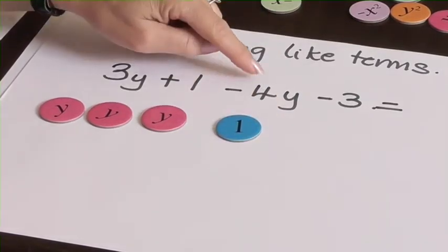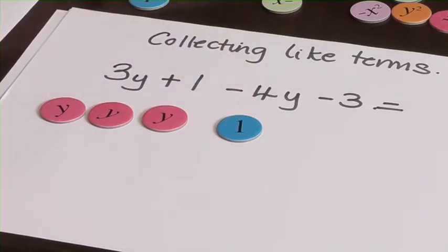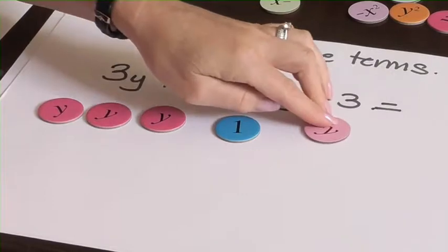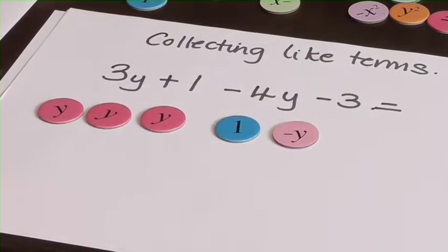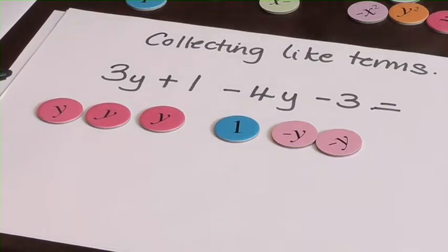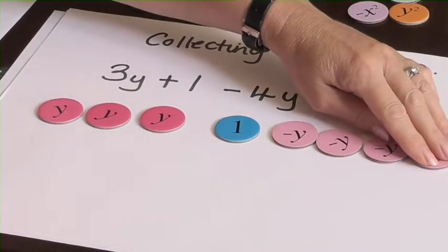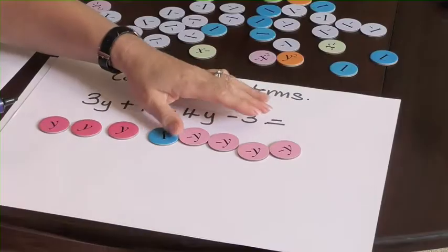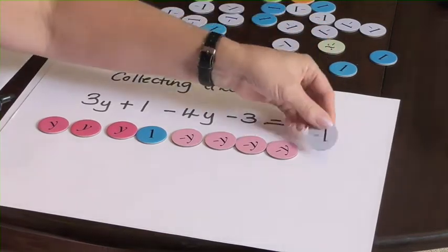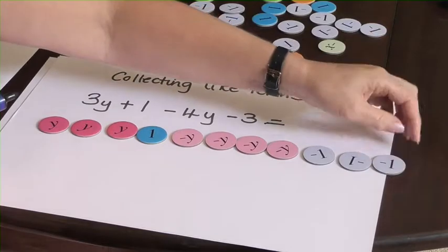And then we've got negative 4y's. So we've got 4y's but they're all negative: 1, 2, 3, and 4. And then we've got, finally, negative 3: 1, 2, 3.